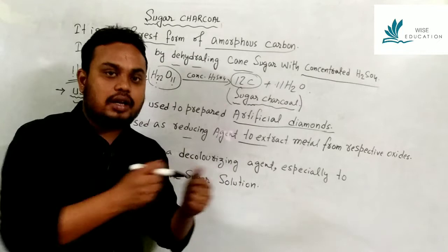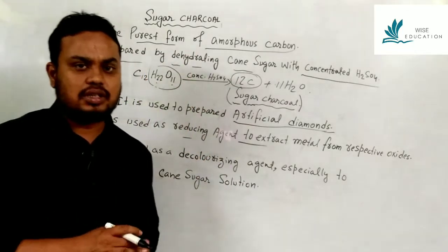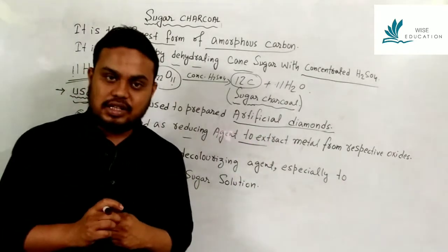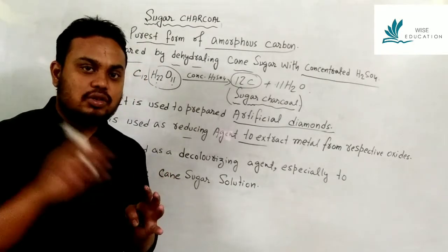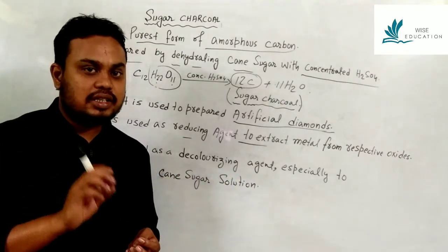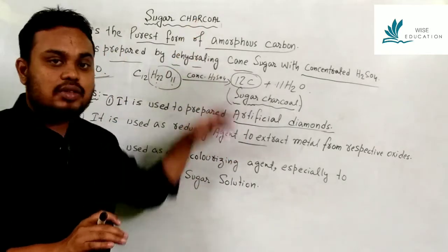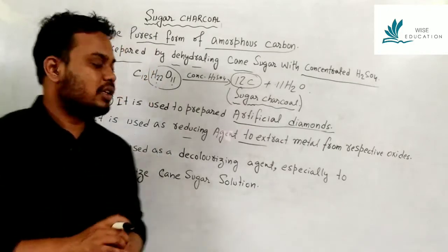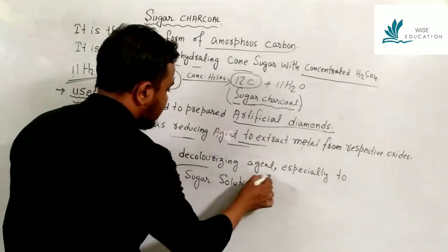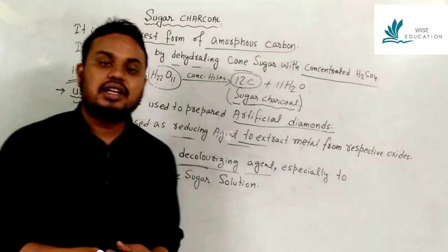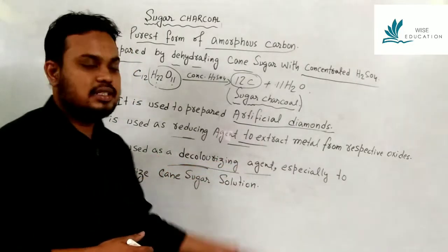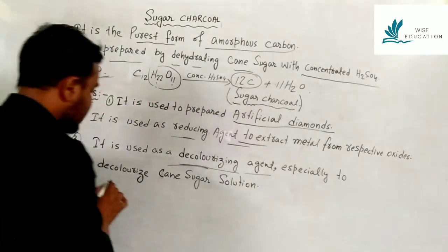Uses of sugar charcoal: It is used to prepare artificial diamonds. It is used as a reducing agent to extract metals from their respective metal oxides. It is also used as a decolorizing agent, especially to decolorize sugar solution.